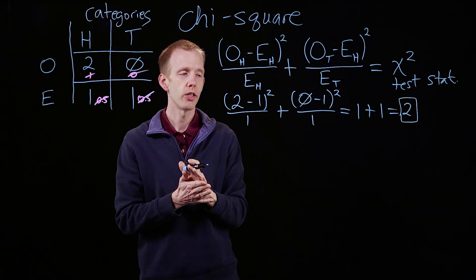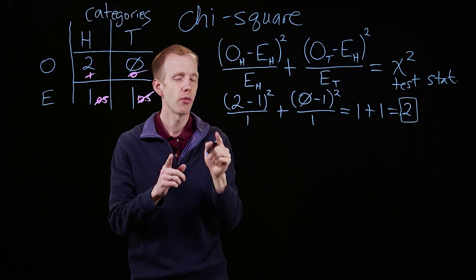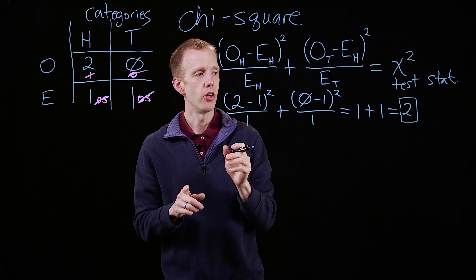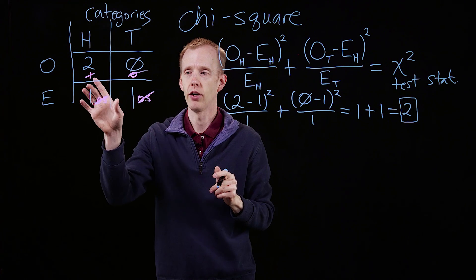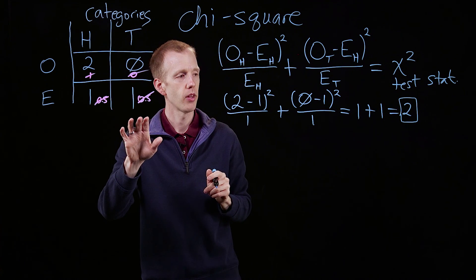And there's only one other piece of information we need, aside from the chi-square test statistic value, to know if there's a significant difference between two heads and zero tails, and a one and one ratio.